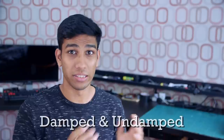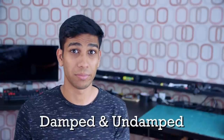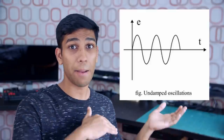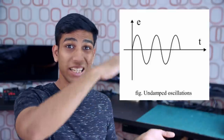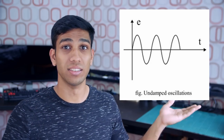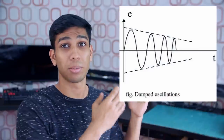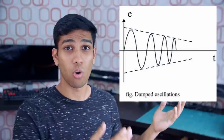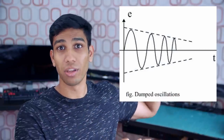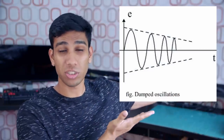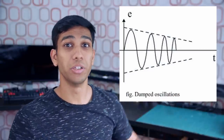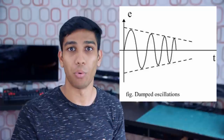Diving a bit deeper, we actually have two different types of sinusoidal waves: damped and undamped waves. Undamped waves look something like this, where the amplitude or the height of your wave signal stays the same, whereas damped wave signals look something like this, where the amplitude becomes shorter as time goes on due to some power loss.